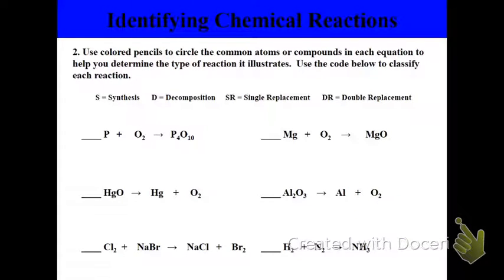So let's take a look at some example chemical reactions. Eventually, we're going to label each of these as synthesis, decomposition, single replacement, or double replacement. So if we start here with phosphorus plus oxygen yielding P4O10, what we see here is that we have two single elements being combined into one. So that shows a synthesis reaction.